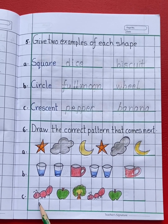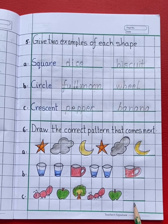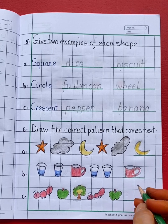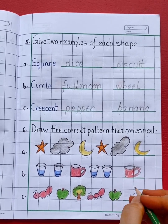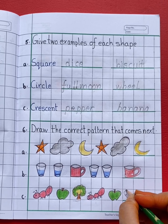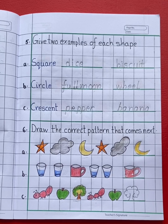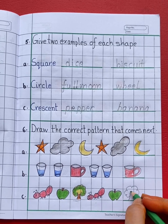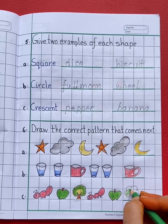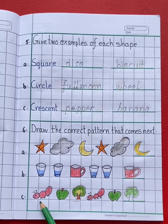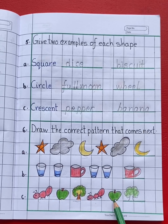See the next pattern. Ant, Apple, Tree. Ant, Apple. What comes next? See the pattern — Ant, Apple, Tree. Tree comes next. So let's start drawing the tree. What is the color of the tree? Green. Ant, Apple, Tree. Ant, Apple, Tree.